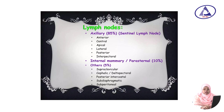Lymphatic drainage consists of lymph nodes. These include the axillary lymph node, which is the major lymph node accounting for 85% — the sentinel lymph node. The axillary lymph node consists of anterior, posterior, lateral, central, apical, and interpectoral groups. The internal mammary or parasternal lymph node accounts for 10%, and others 5%.